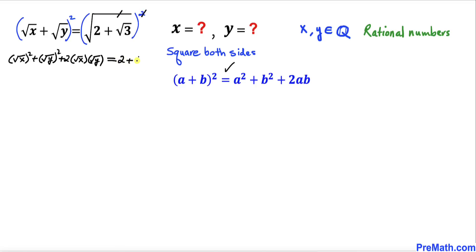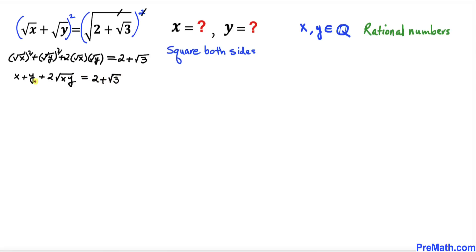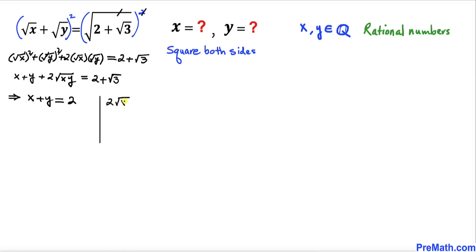So we end up with 2 plus square root of 3 on the right. On the left-hand side, the square and square root undo each other, giving us x plus y plus 2 times square root of x times y equals 2 plus square root of 3. Comparing rational and radical parts: x plus y equals 2, and 2 times square root of xy equals square root of 3.